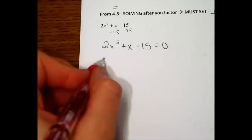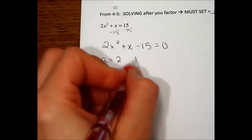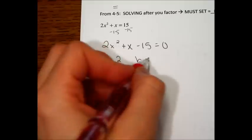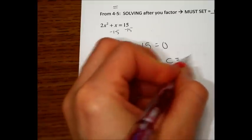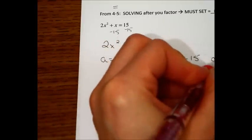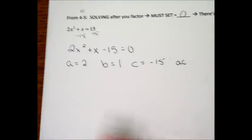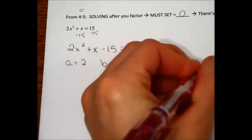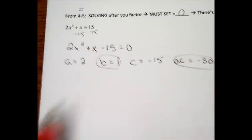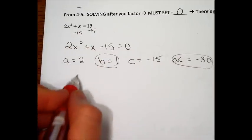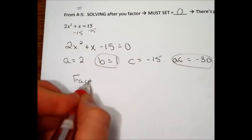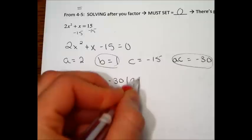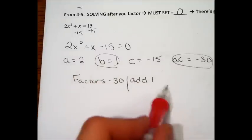Now we're going to do a is 2, b is 1, and c is negative 15. When you multiply a times c, you do 2 times negative 15 and get negative 30. Focus on b and ac. I need factors of negative 30 and they need to add to a positive 1.